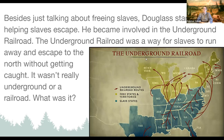Besides talking about freeing slaves, Douglass actually started helping slaves escape. He became involved in the underground railroad. If you're not familiar with that idea, the underground railroad is not an actual railroad and it isn't actually underground. It was the name for a route or a way for slaves to run away and escape to the north without getting caught.